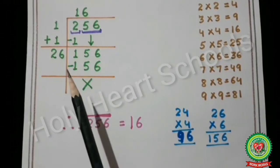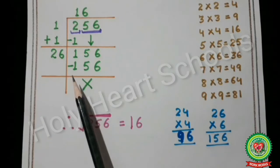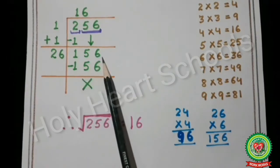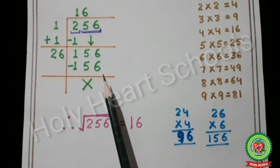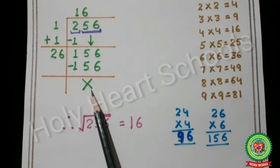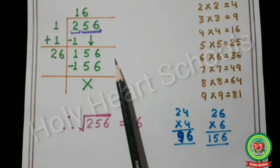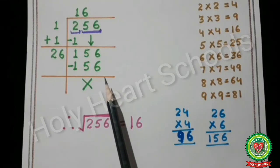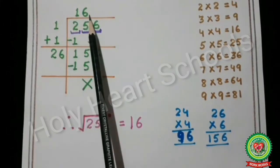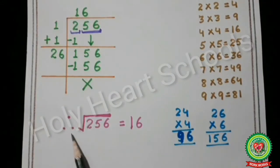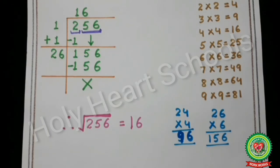The next step is to find the remainder: subtract 156 from 156, giving 0. In long division, whenever we get 0 we put a cross. We are left with no pair and remainder is 0, so we stop here. Therefore, the square root of 256 is equal to 16.